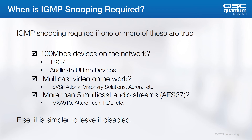A question we get a lot is: when do I need to configure IGMP snooping, as it can be difficult to configure on some infrastructures? QLAN streams are unicast, so a standalone Q-SYS audio system, even a very large one, often doesn't need any IGMP features enabled. Here are some guidelines: Are there any 100 Mbps devices on the network, such as TSC-7s or Audinate Ultimo devices? These can tolerate much less broadcast traffic than a 1 Gbps device. Do you have multicast video on the network? IGMP is a must in that case. Do you have more than 5 multicast audio streams? Remember that AES-67 uses multicast streams for everything. If your answers to all those questions are no, then you should be fine to leave IGMP snooping disabled on your switches.